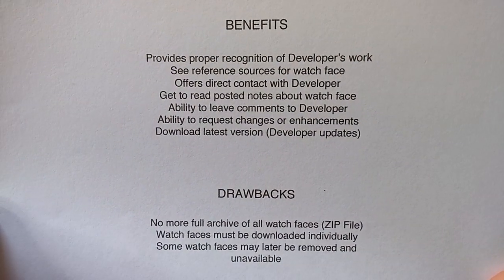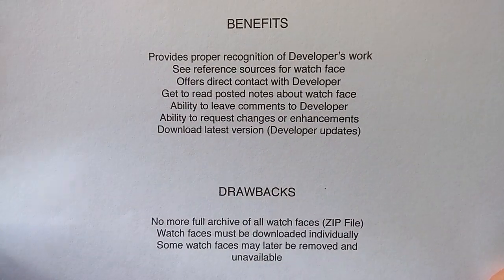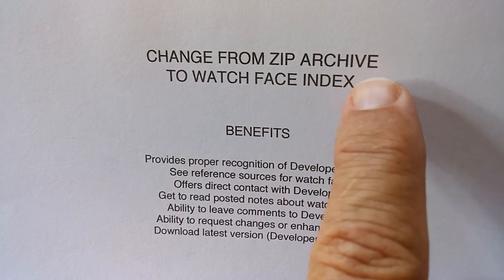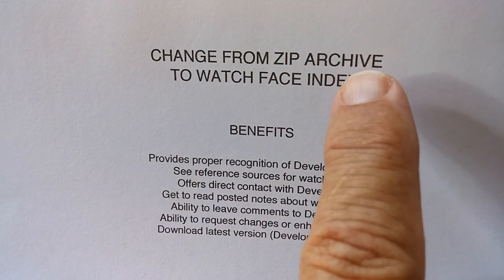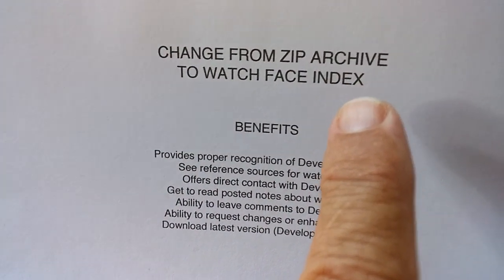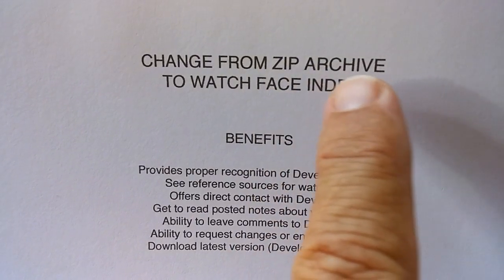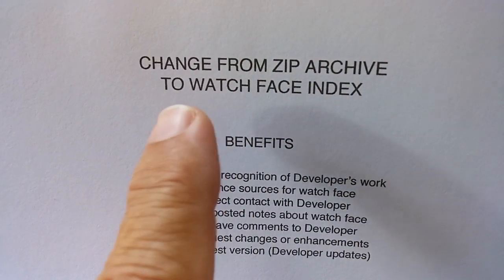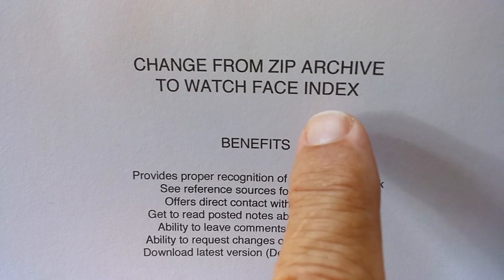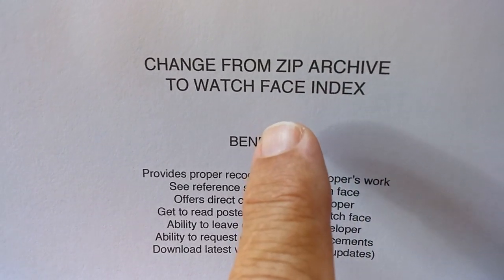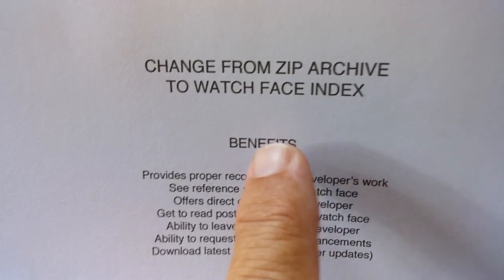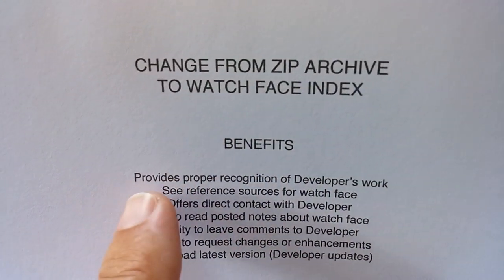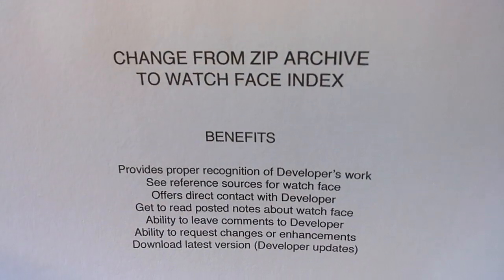But nonetheless, benefits and drawbacks, this is the way to go. So we are going to be removing the zip archives that you've been seeing before. If it's possible to reconstitute the zip file of all of those clock faces into a new watch face index, we'll do that. But that's really time consuming. It'll probably start with the month of May, then go back to April.